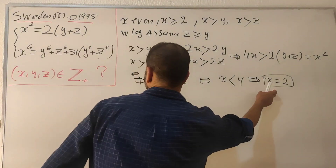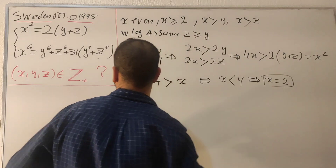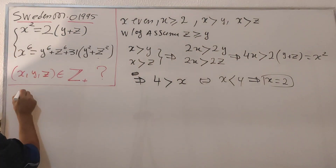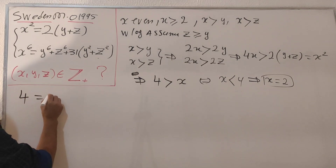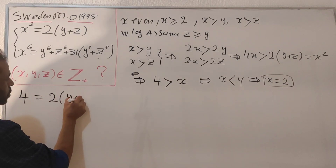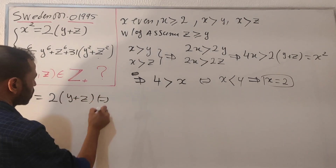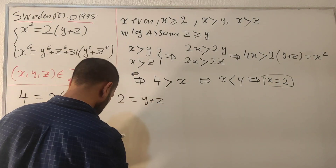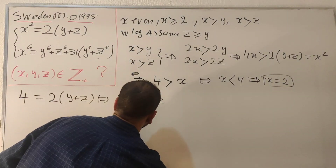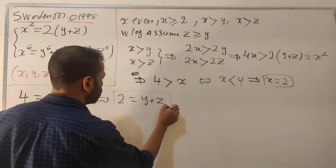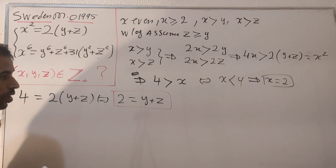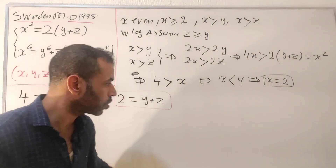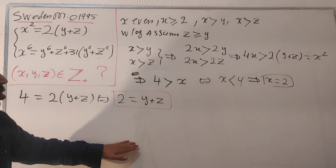Now let's substitute x = 2 into the first equation. We get x squared = 4 equals 2 times (y + z). Dividing both sides by 2 gives y + z = 2. So we have determined that the sum of y and z equals 2.